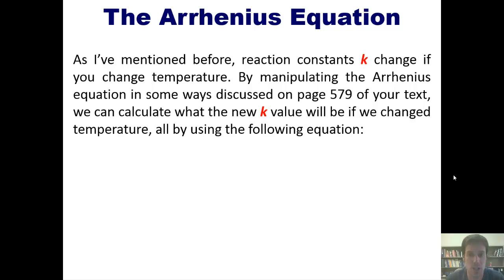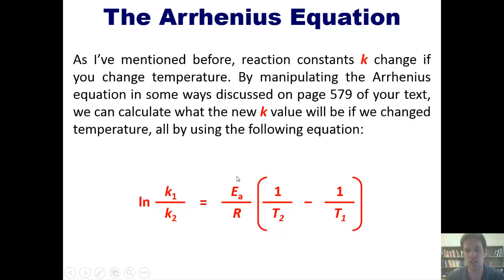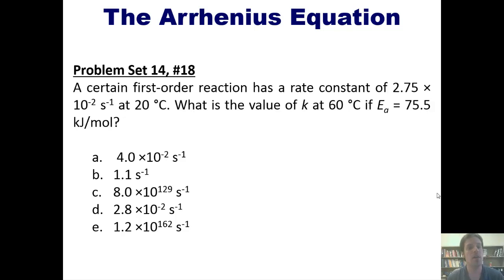If you change the temperature of a reaction, you change the reaction constant K. By manipulating the Arrhenius equation, we can calculate what the new K value will be if we change the temperature. This equation allows you, if you have a rate constant at one temperature and a rate constant at another temperature, to determine the activation energy or the respective temperatures. For example: a certain first-order reaction has a rate constant at 20 degrees Celsius — what's the new rate constant at 60 degrees Celsius if its activation energy is 75.5 kJ per mole? I'll post a link to a separate video where I solve this.